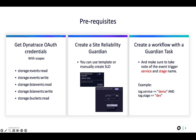A second prerequisite is to already have created a Site Reliability Guardian inside Dynatrace. The final prerequisite is to have a Dynatrace workflow with the Site Reliability Guardian task already added and configured to be triggered based on a VisEvent that will contain Tag.Service and Tag.Stage values, as you see in the example.